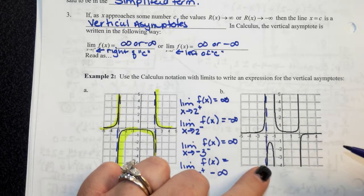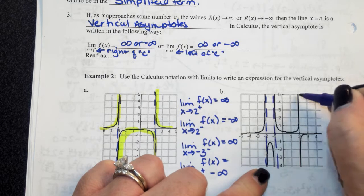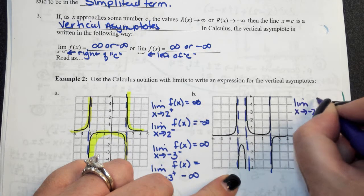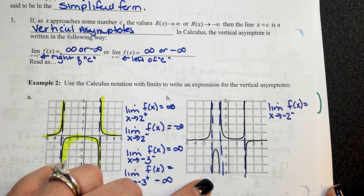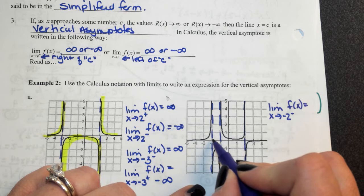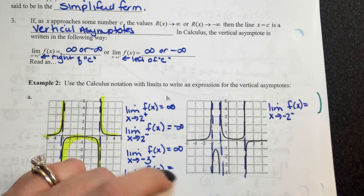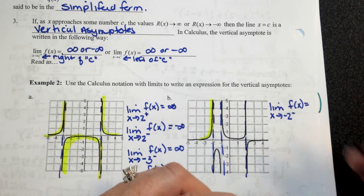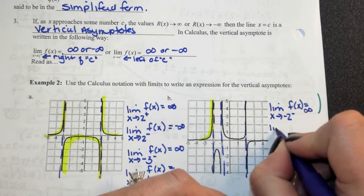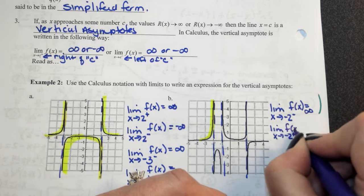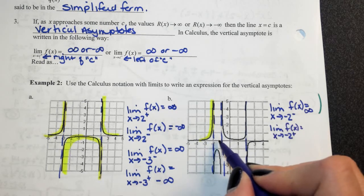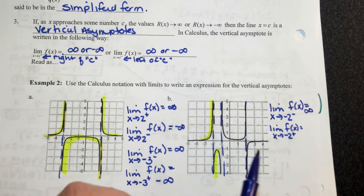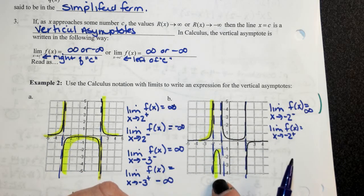You have a vertical asymptote at negative 2, a vertical asymptote at negative 1, and a vertical asymptote at 2. The limit as x approaches negative 2 from the left — go to negative 2 on your x-axis, move your pencil to the left. As your graph gets closer and closer to negative 2 on the left, it's going towards infinity. Now the limit as x approaches negative 2 from the right — go to the right of negative 2 and trace; it's going towards negative infinity.